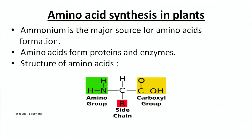Amino acid synthesis in plants: ammonium is the major source for amino acids, and amino acids form proteins and enzymes. The chief structure of an amino acid consists of a carbon atom, a hydrogen, a side chain or functional group, a carboxyl group on one side, and an amino group on the other side. The area of concern here is the amino group — ammonium formed directly is involved in the formation of this amino group. Amino acid biosynthesis in plants happens by two main processes.